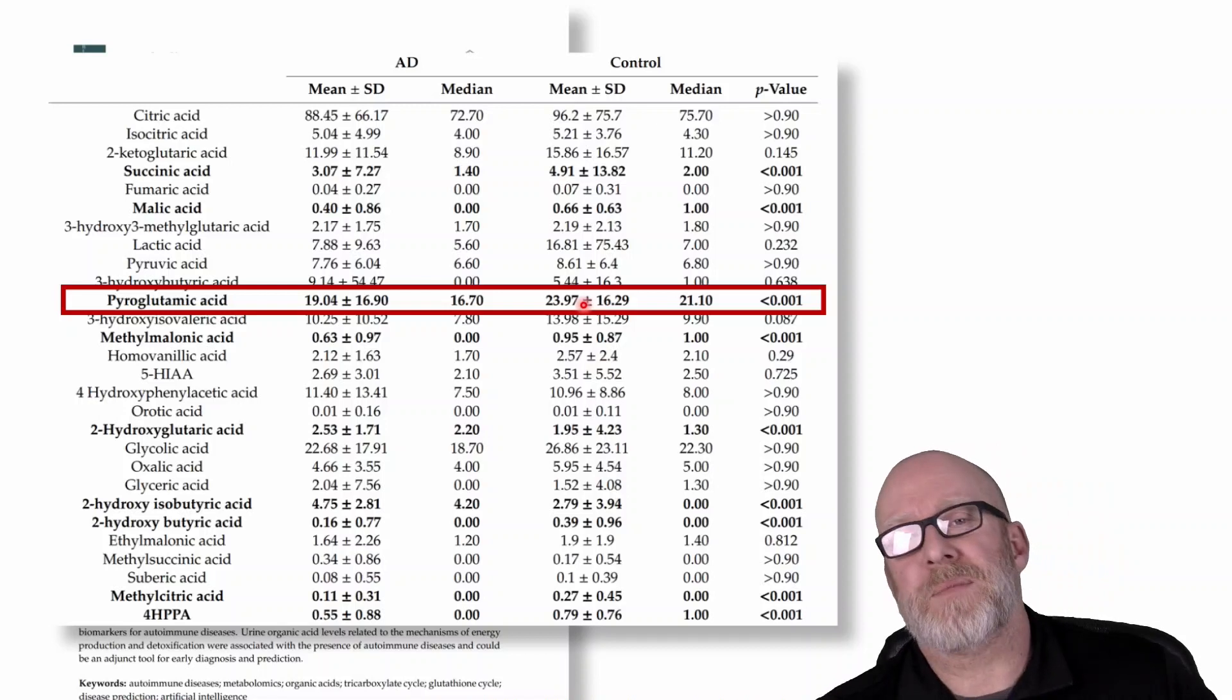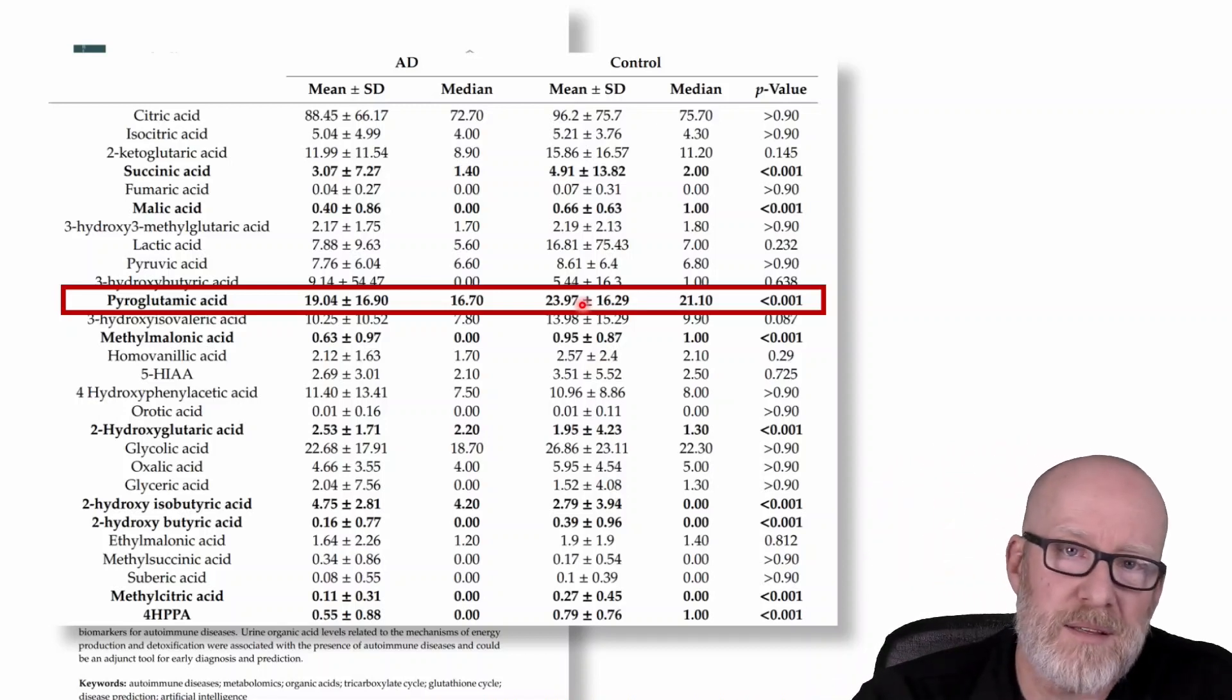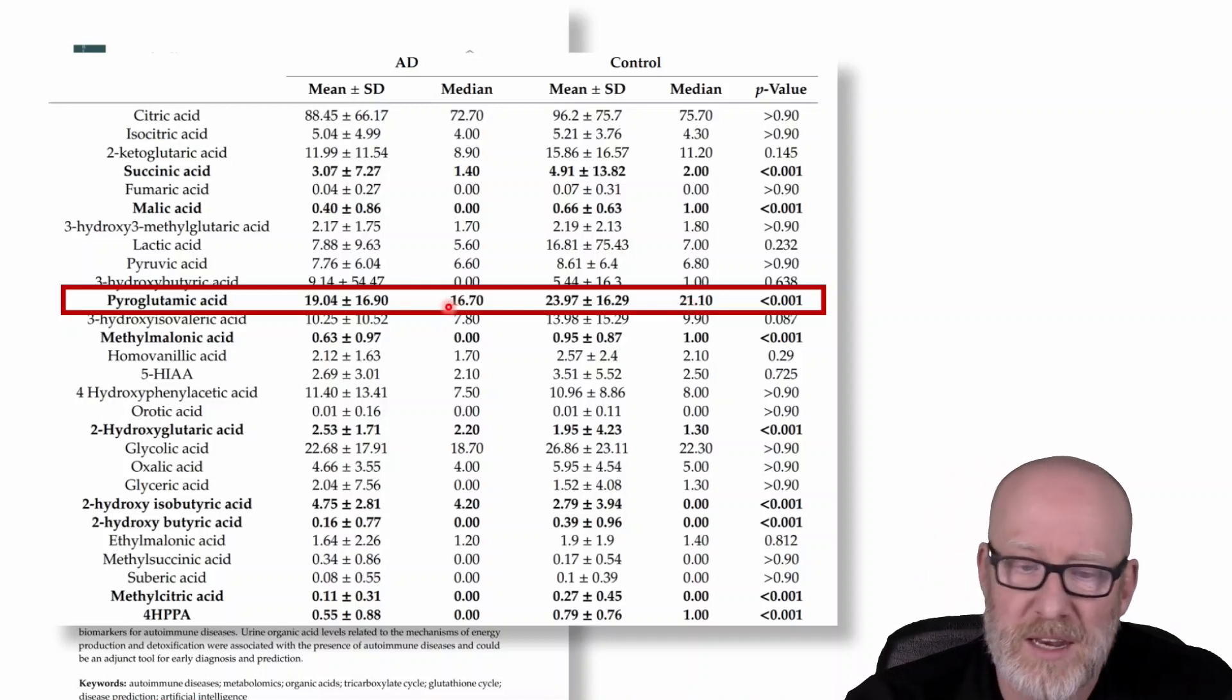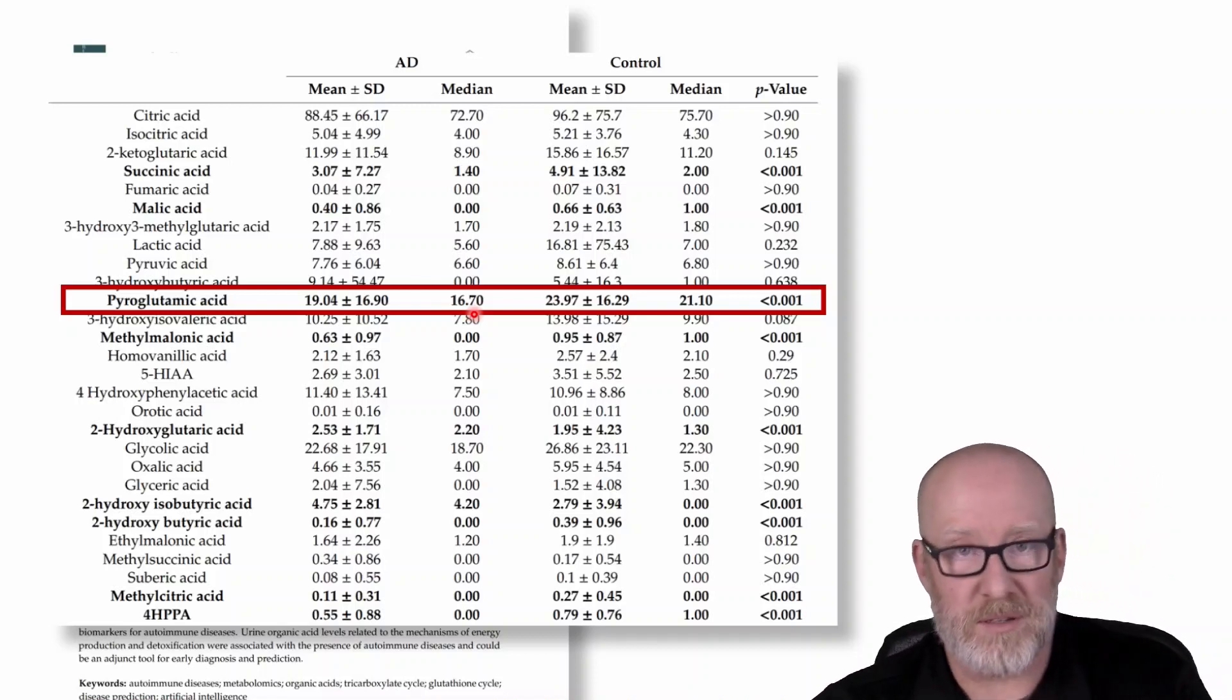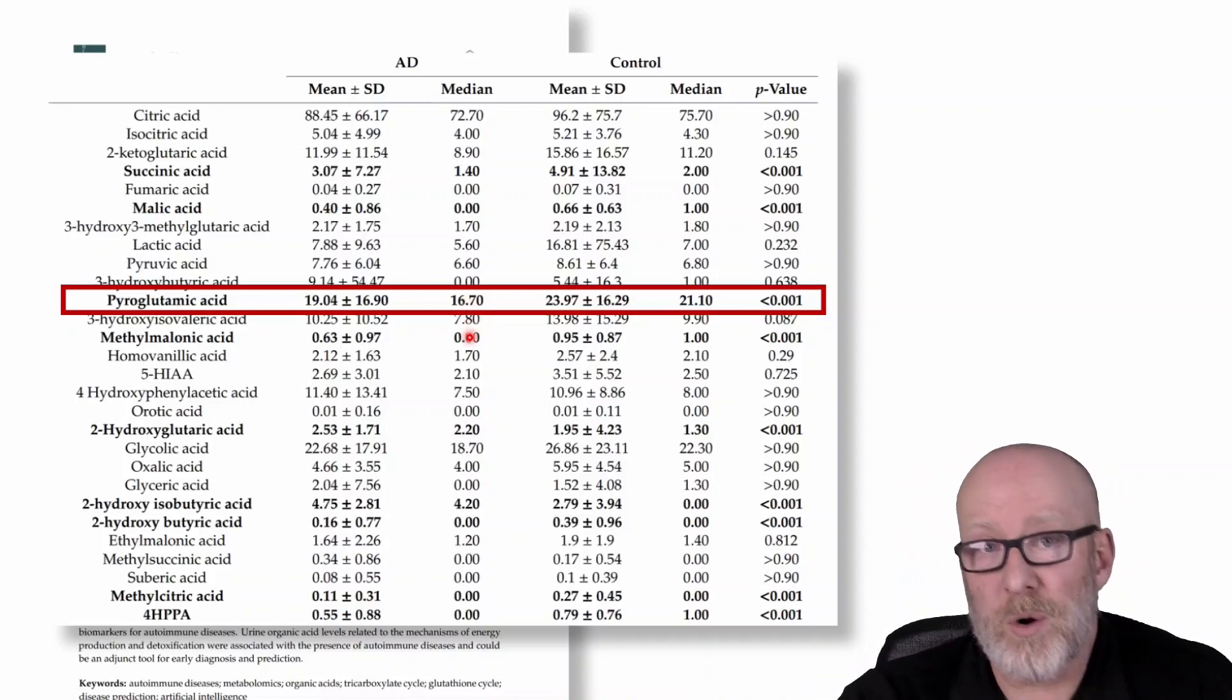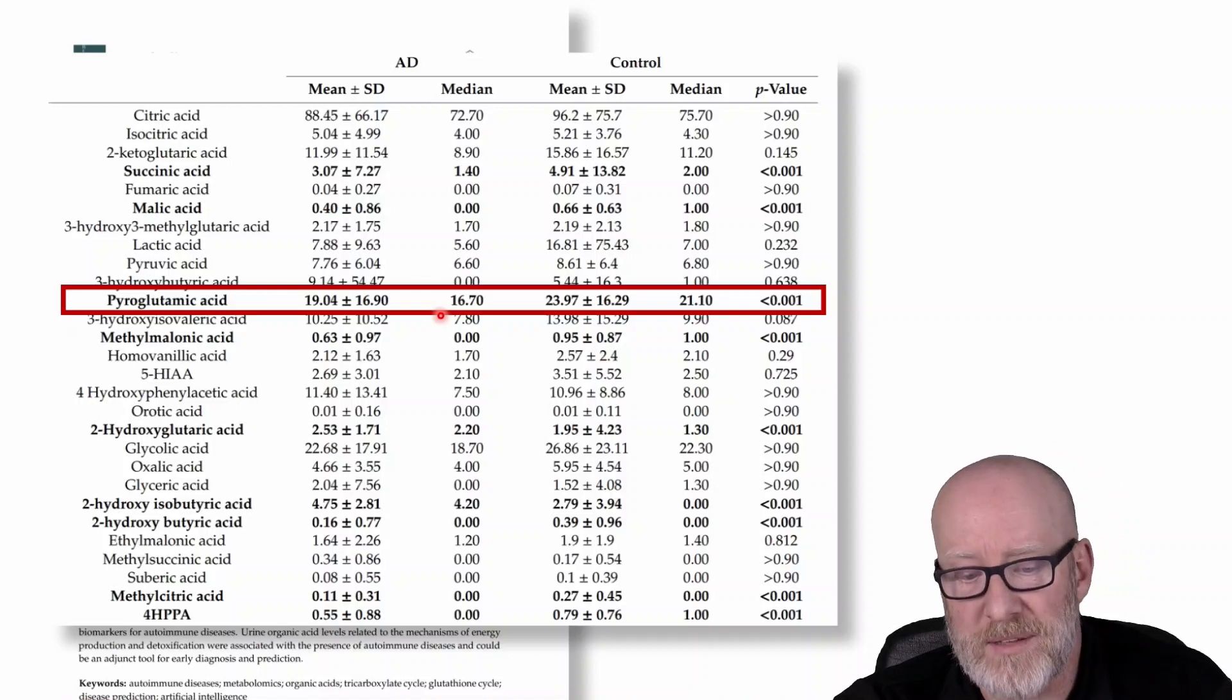But here's what's really interesting. Remember, elevated pyroglutamic acid is associated with low glycine and supposedly a glutathione need. But here, the control has a slightly higher pyroglutamic acid than do the autoimmune patients. And if these experts were right, suggesting that all autoimmune people need, or patients need glutathione, you'd expect this to be higher. Or if pyroglutamic acid was, in fact, a good marker for glutathione status, which perhaps it's not, you'd expect this to be higher. Whichever way you look at this thing, something doesn't add up.